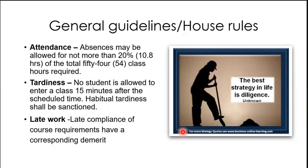For example, if you're supposed to get 10 points for an activity but you submitted it a day after, you'll get 8 points instead, and so on until zero. For Google Classroom, I'll be checking it every day to track late submissions, compared to LMS where I can see exactly when you submitted your output. So you will be using your LMS.